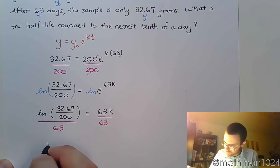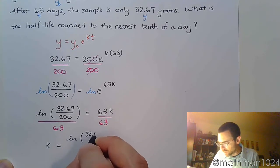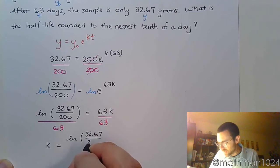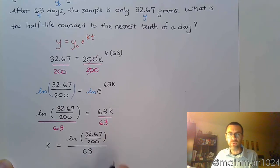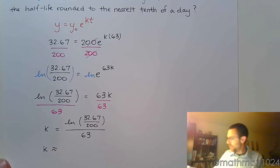And now we've got our K. It's not the prettiest number in the world, but it is what we're looking for. So 32.67 divided by 200, all of this divided by 63. And you know what we're going to do now. We're going to put this in the graphing calculator and come up with our value for K.